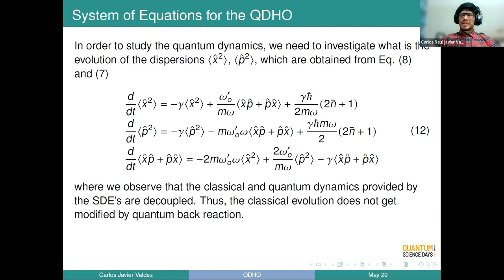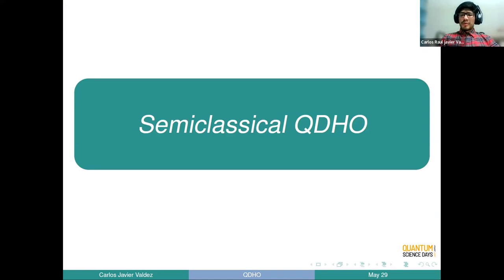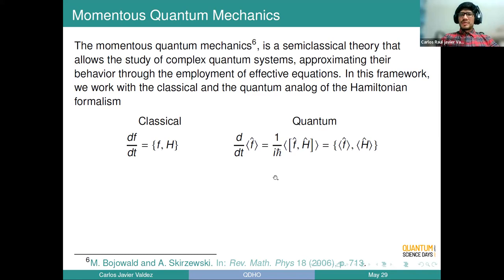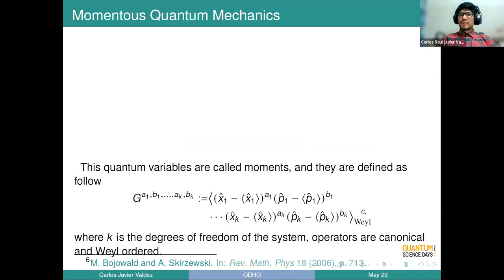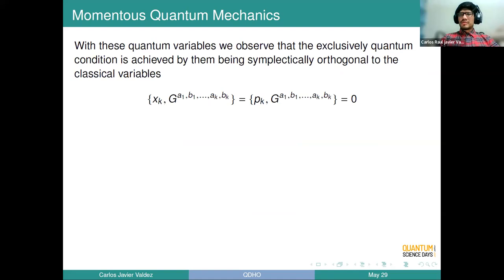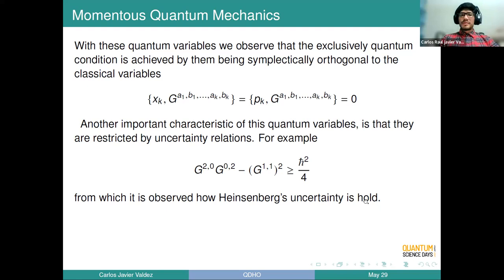What I am proposing here is to study the Bateman system using what is called Momentum's quantum mechanics. In this formalism, we use the old idea of Heslott — that quantum mechanics is provided with a Poisson structure in the sense that you have something like a phase space. It is also important to introduce pure quantum variables. The cool thing about these pure quantum variables is that when you take the Poisson bracket between the classical variables and these new quantum variables, they are symplectically orthogonal.